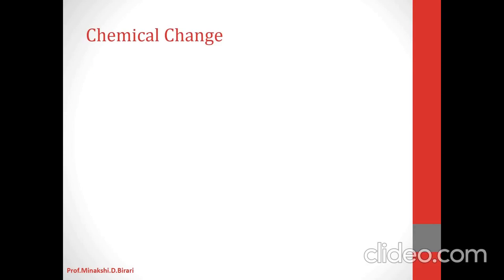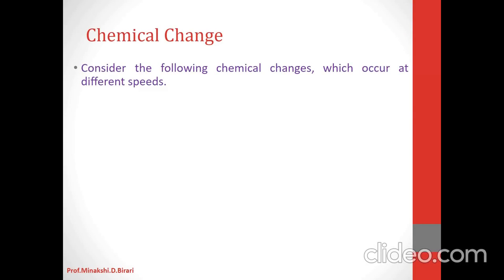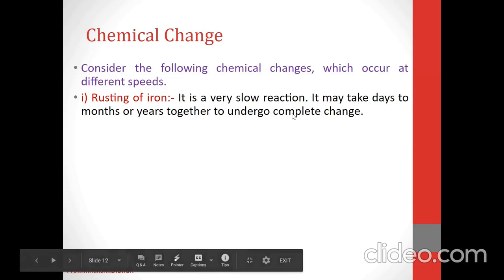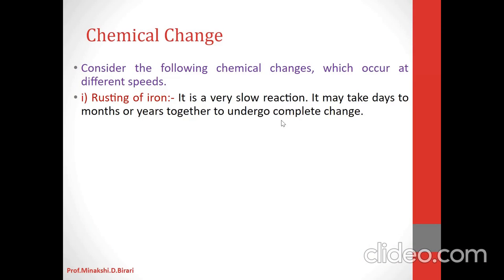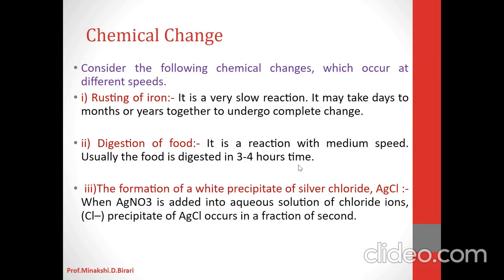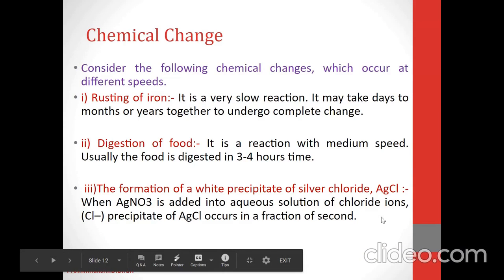Consider the following chemical changes which occur at different speeds. First, rusting of iron — it is a very slow reaction and may take days to months or years together to undergo complete change. Second, digestion of food — it is a reaction with medium speed; usually, food is digested in 3 to 4 hours. Third, the formation of a white precipitate of silver chloride (AgCl) — when AgNO3 is added to an aqueous solution of chloride ions, the precipitate of AgCl forms in a fraction of a second.